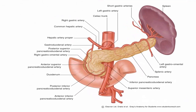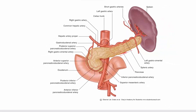The body of the pancreas in cross-section has three surfaces and three borders. The upper border has a splenic artery in a wave course. This shows the anterior surface, the posterior surface, and the inferior surface. The tail of the pancreas passes through the lienorenal ligament to reach the hilum of the spleen.